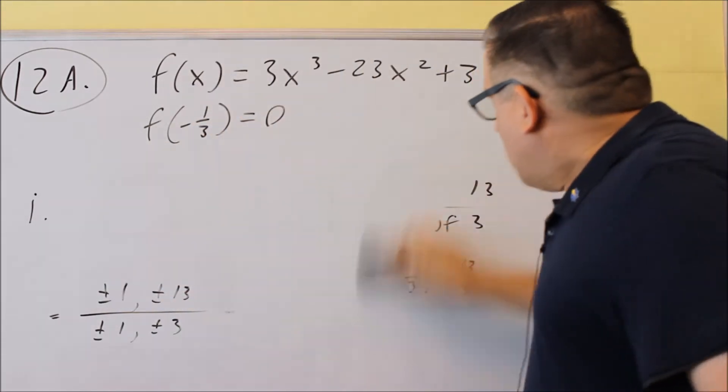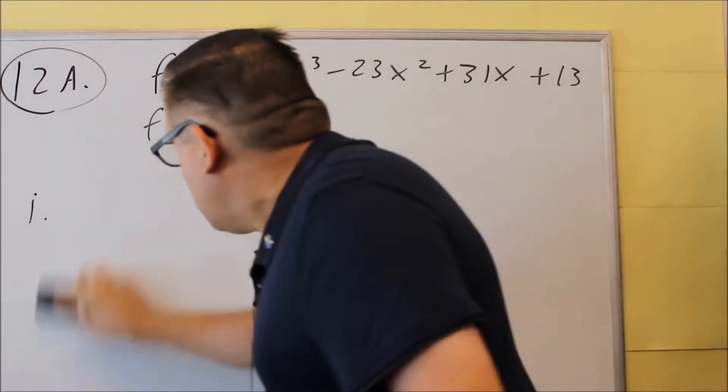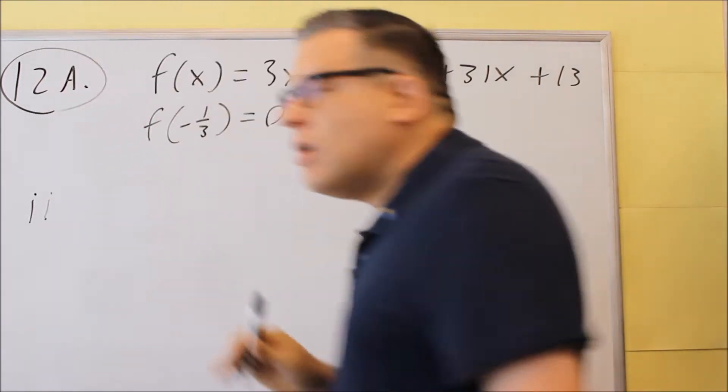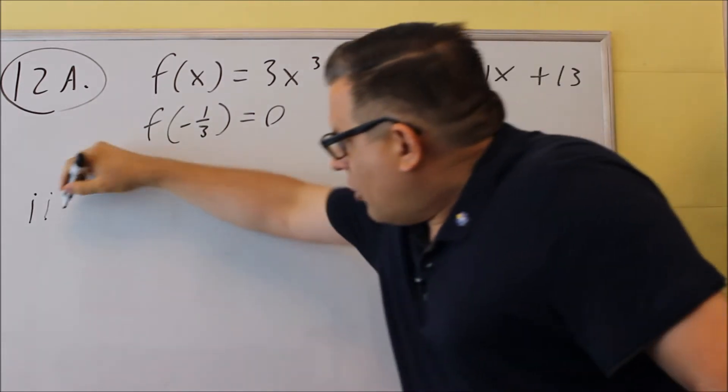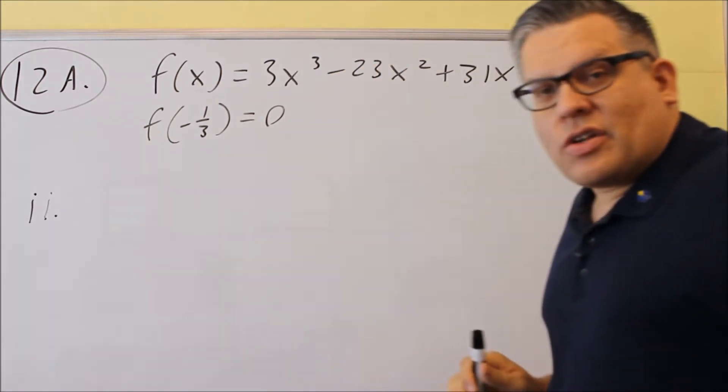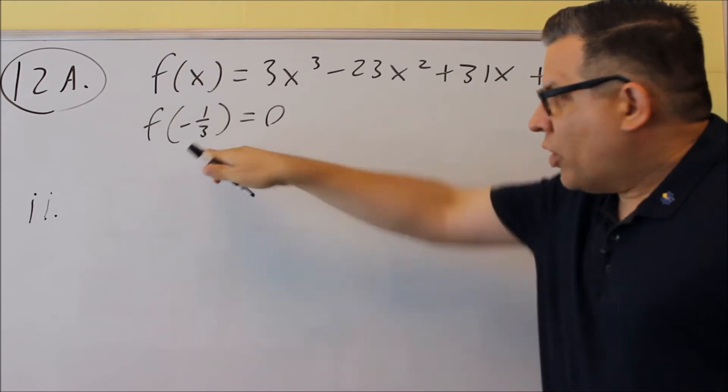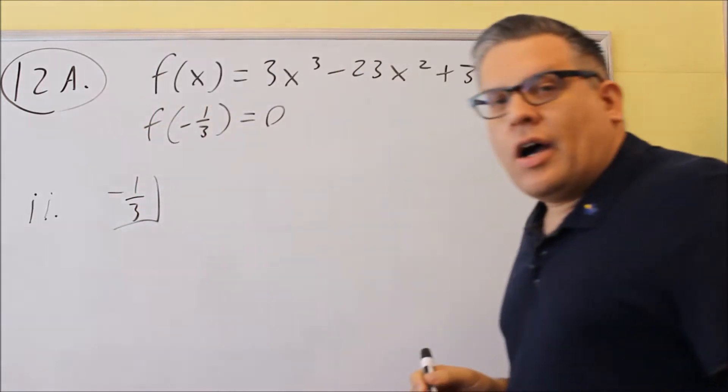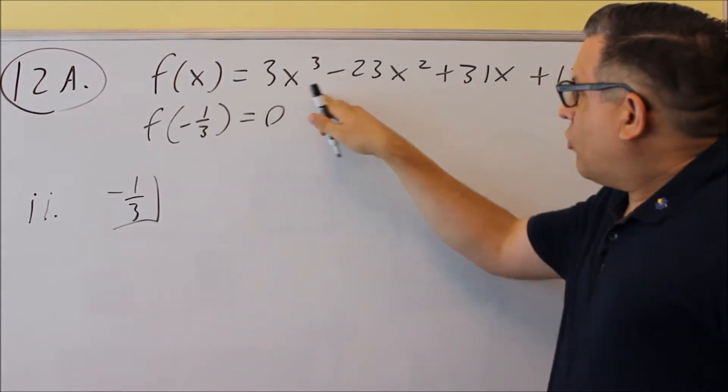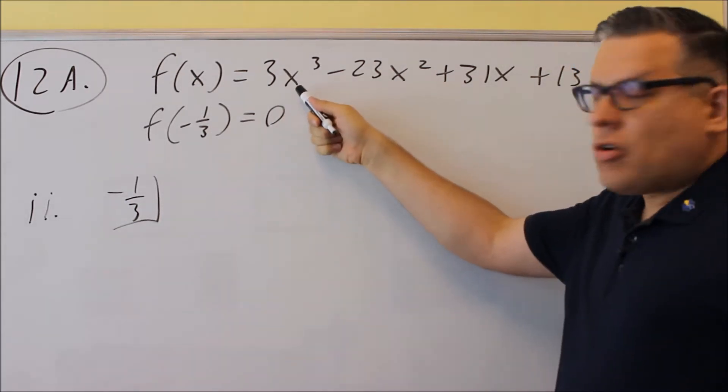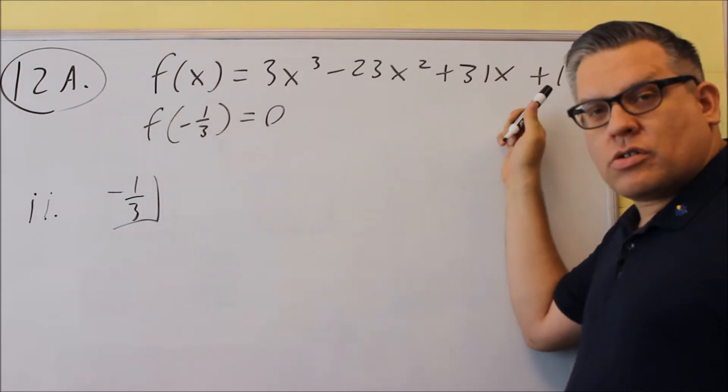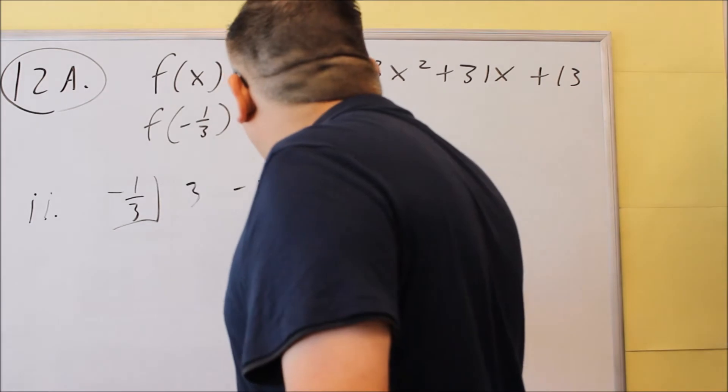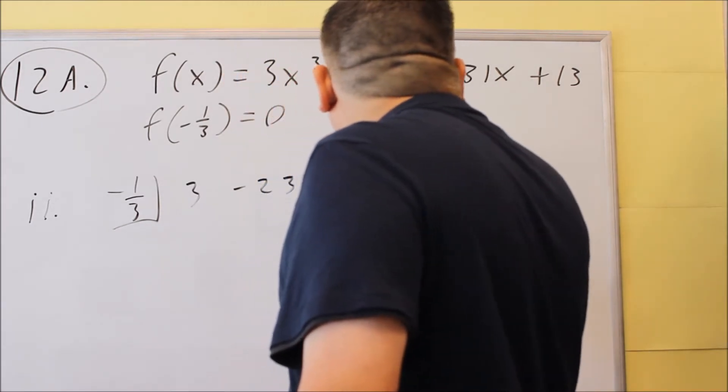Now the second part is asking you to use the zero to find the other zeros. And we want to do this by using synthetic division. Whatever number that you see in the parentheses, we're going to put that right here in a box. And then we're going to write these. Now you want to make sure that these are all descending powers and there's no terms that are missing. So when we put that in, we have 3, negative 23, 31, and 13.